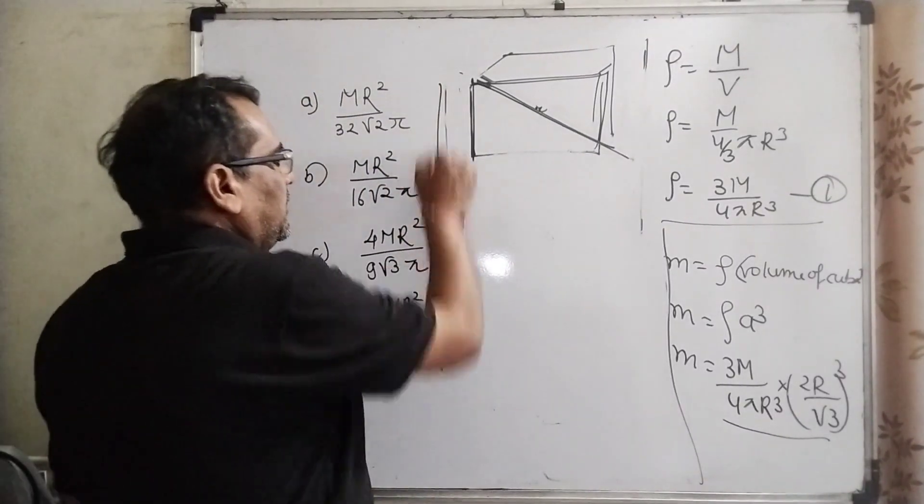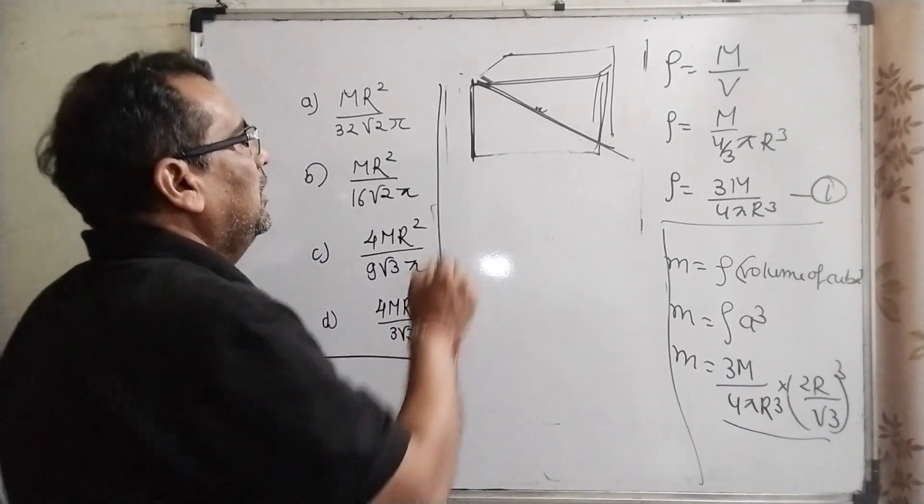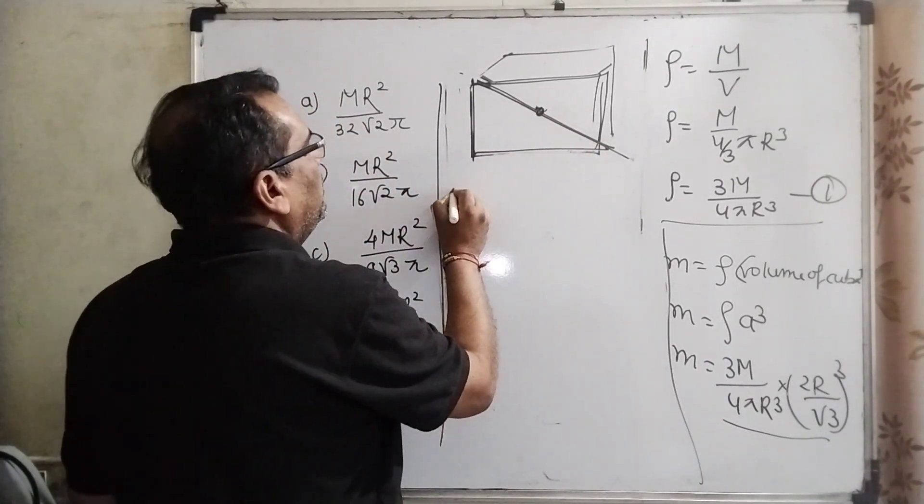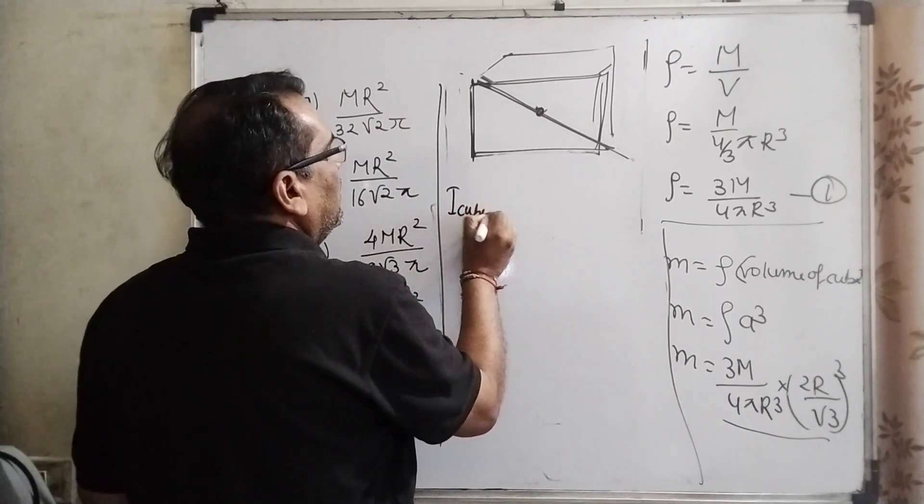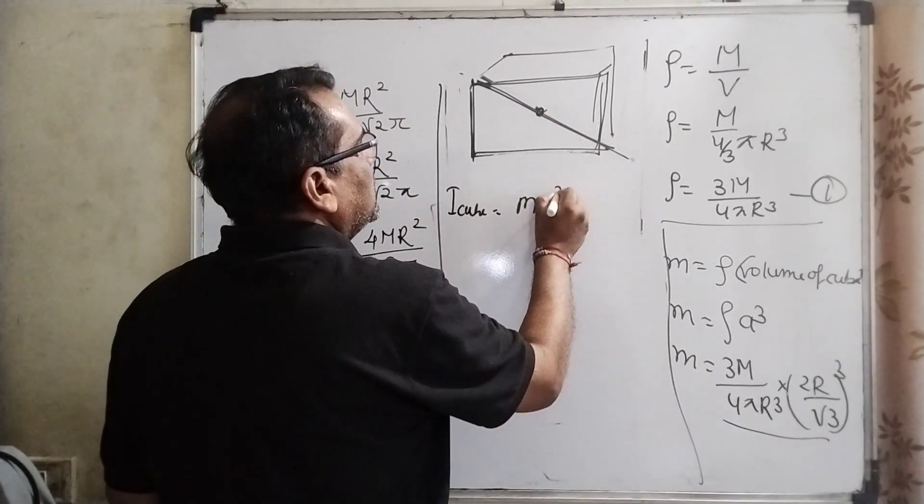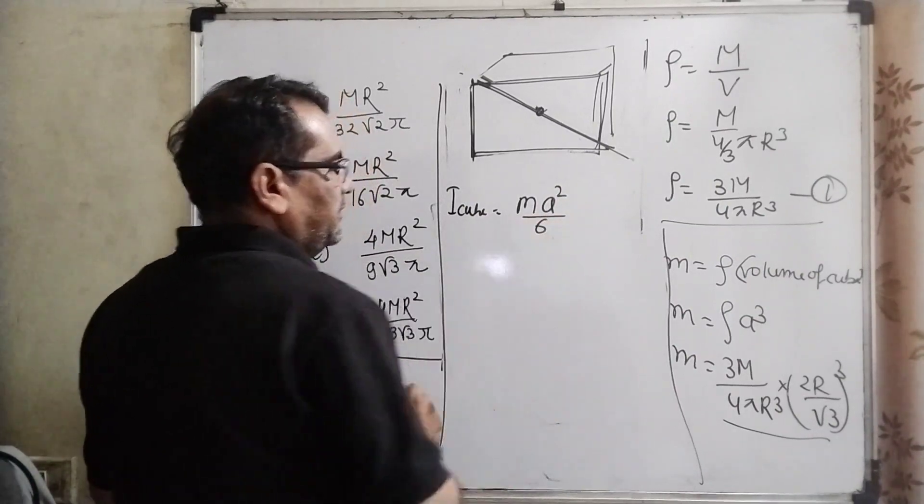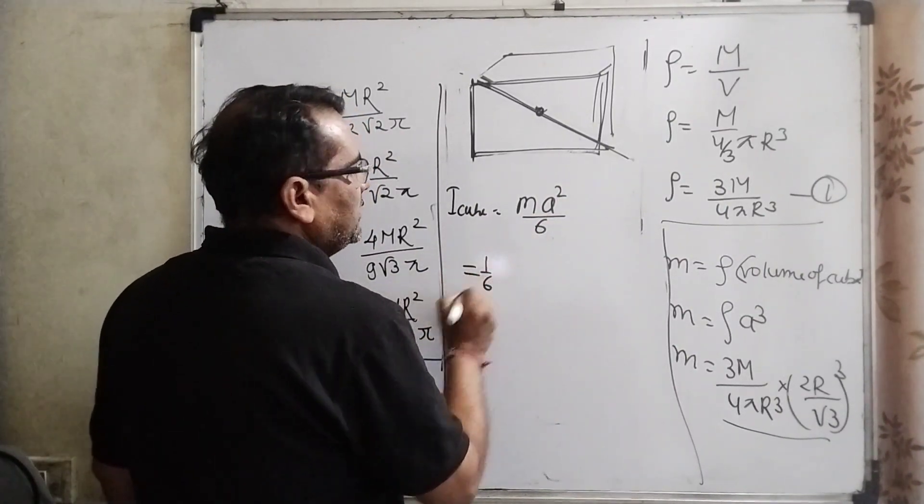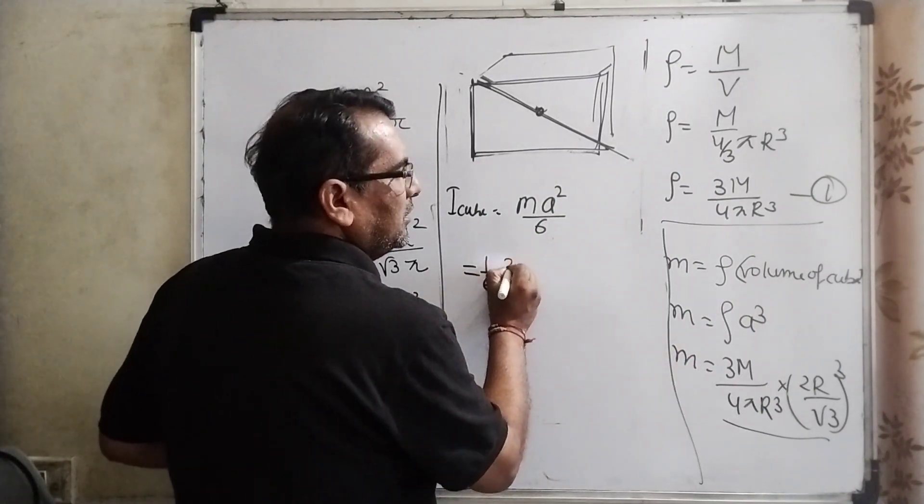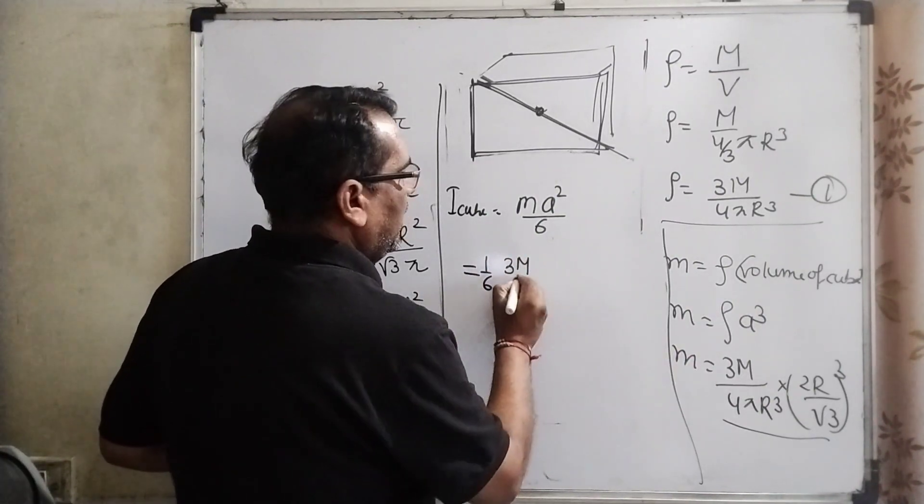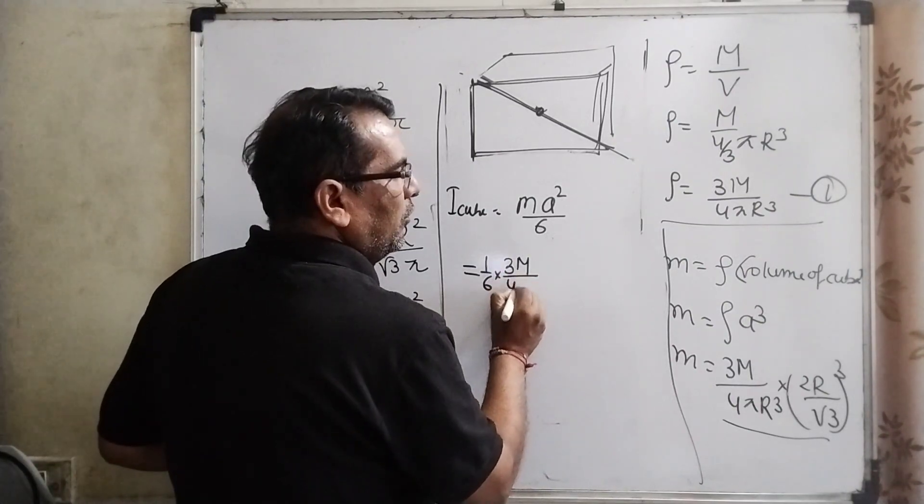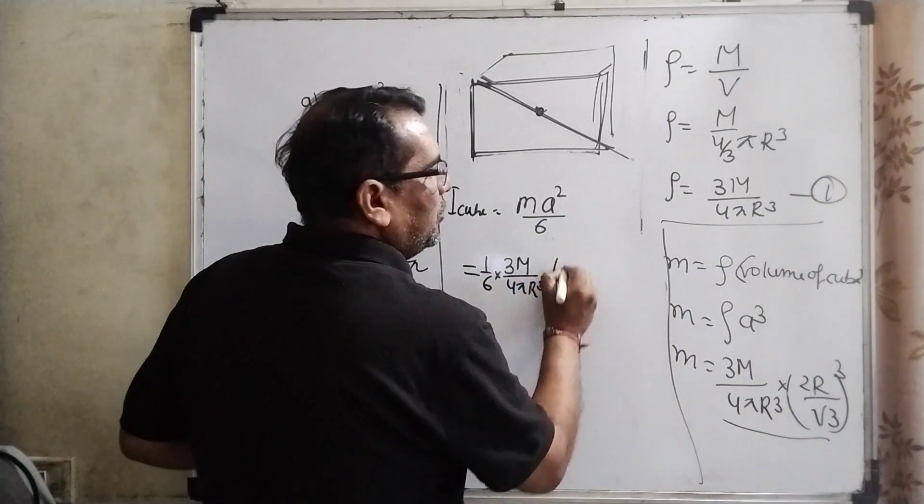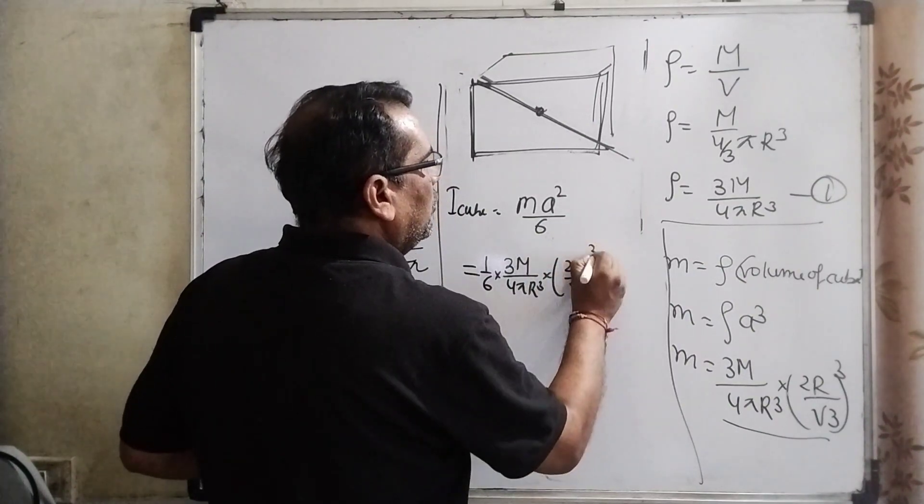Now moment of inertia about the axis passing through the center of this diagonal of the cube. Then I_cube = ma²/6. Then substitute the value: 1/6 times, what is the value of m? 3 capital M upon 4πR³ times (2R/√3)³.